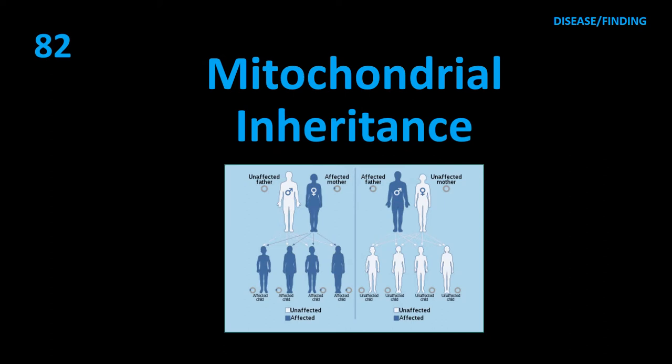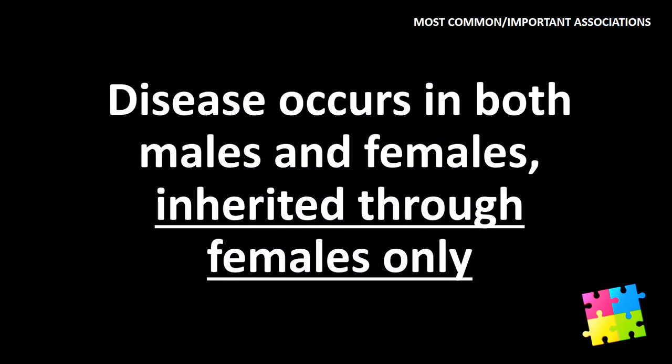Item 82: Mitochondrial inheritance — disease occurs in both males and females, but is inherited through females only.